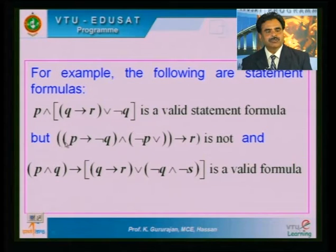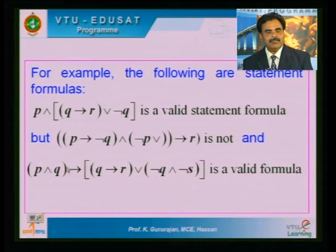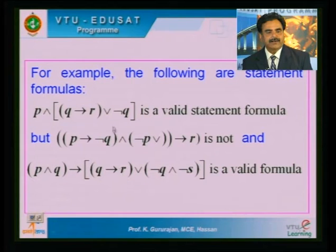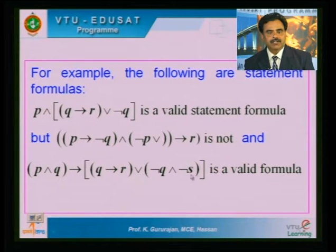To verify a valid formula, check that wherever a logical connective is used two variables are properly combined, and that parentheses are balanced — the count from the left must equal the count from the right. An imbalance makes the formula invalid. The first and last examples shown are valid statement formulas; the middle one is invalid.